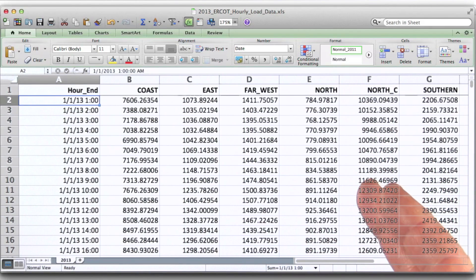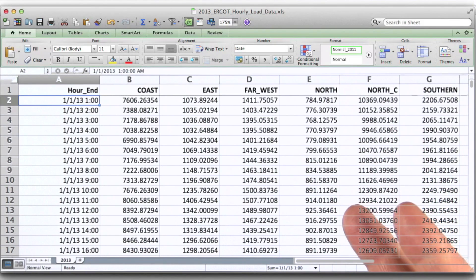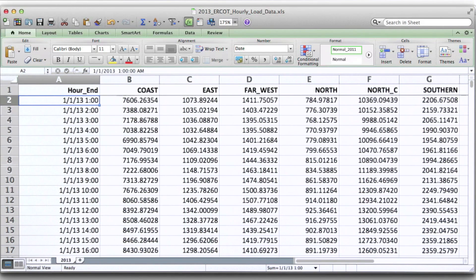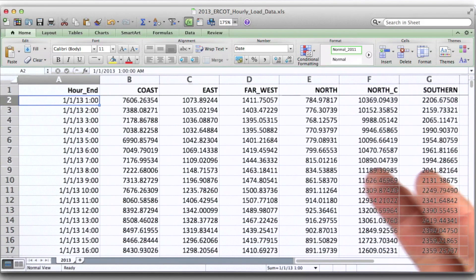Let's turn our attention now to working with Excel documents. I'd like to use as an example here data from the Electric Reliability Council of Texas. This is an organization that manages the flow of electricity to millions of Texas customers.